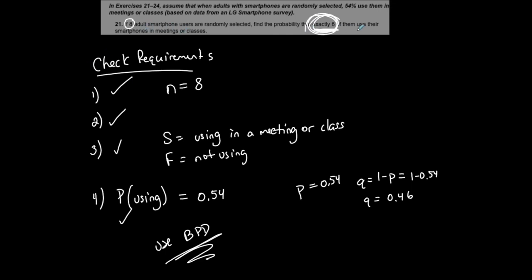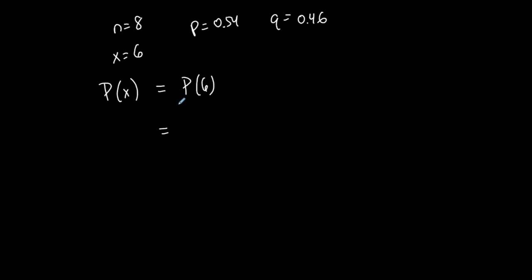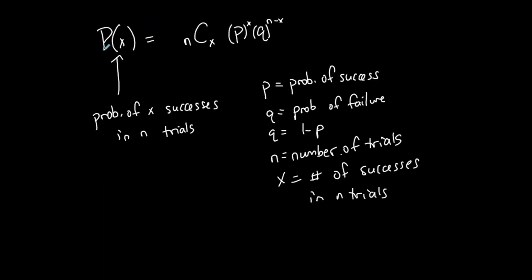This question asks: find the probability that exactly six of them use their smartphones in a meeting or class. Six out of eight — that is x, the number of successes. Success is defined as using in a meeting or class, so for this question x equals 6, and I want to find P(6).